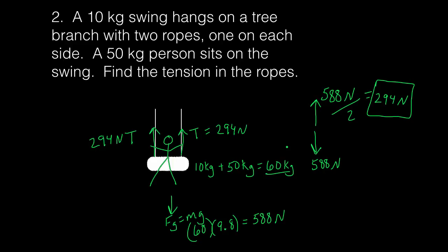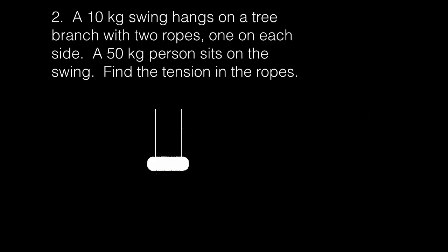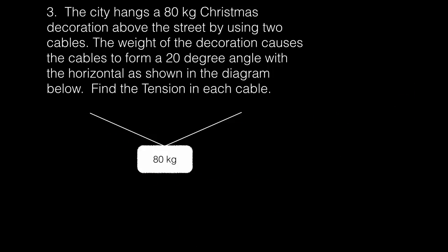Now let's try a more difficult problem — one in which tension is not straight up and down, but at an angle. Number three says the city hangs an 80 kg Christmas decoration above the street using two cables. The weight of the decoration causes the cables to form a 20 degree angle with the horizontal, as shown in the diagram. Find the tension in each cable.